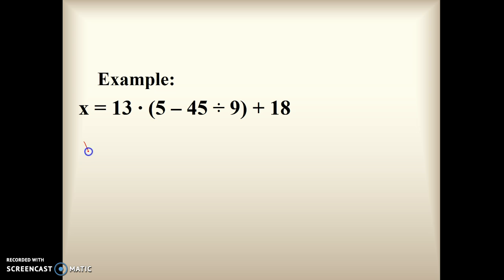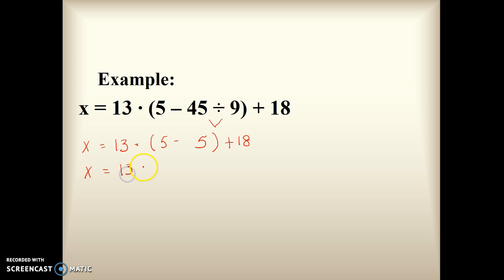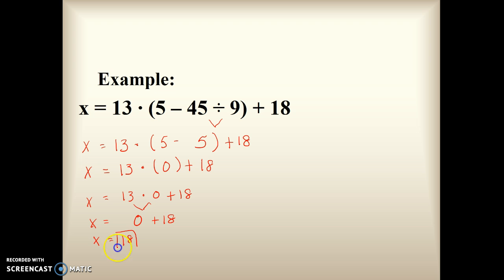Alright, more parentheses. Let's solve within the parentheses first. Since we have a subtraction and division problem inside, we solve the division first: 45 divided by 9 is 5. Then 5 minus 5 is 0. Now we can remove the parentheses, so we have x equals 13 times 0 plus 18. There's a temptation to just drop the 0 and say it's 18, but order of operations tells us to solve the multiplication first: 13 times 0 is 0. Now we have 0 plus 18, and our answer is 18.